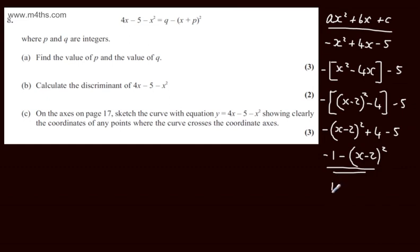So from here we can see that p will be equal to minus 2 and q will be equal to minus 1. So final answer: p is minus 2, q is minus 1.